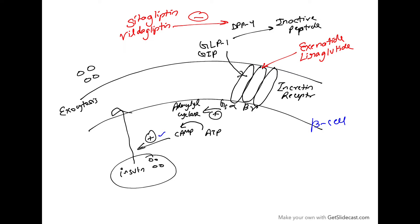The GLP-1 or GIP molecules are rapidly degraded into inactive peptides by the DPP-4 enzyme. So we can give DPP-4 inhibitors like sitagliptin and vildagliptin.